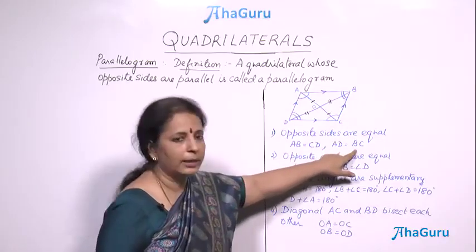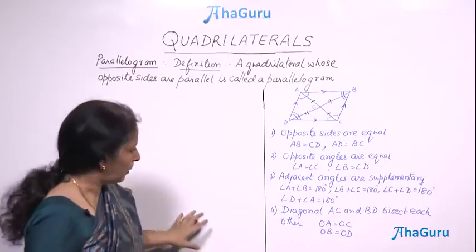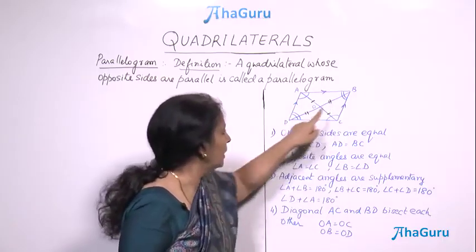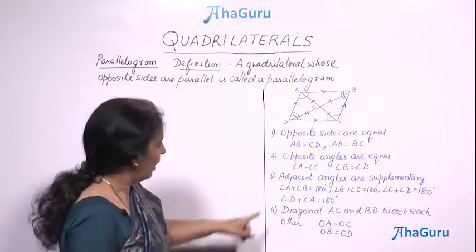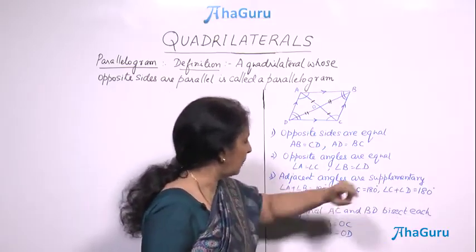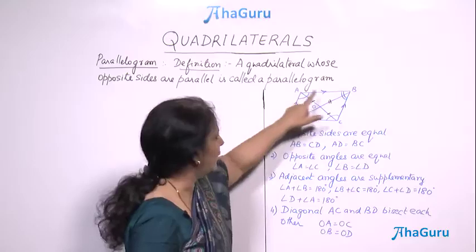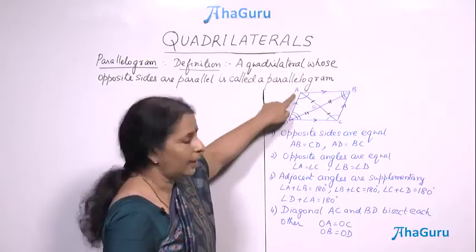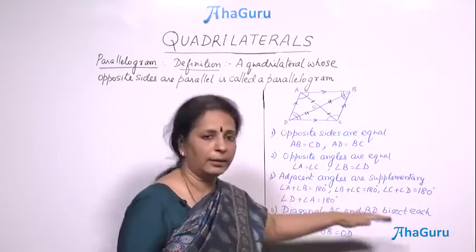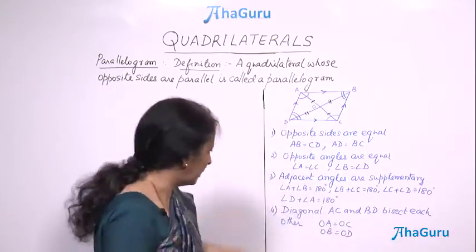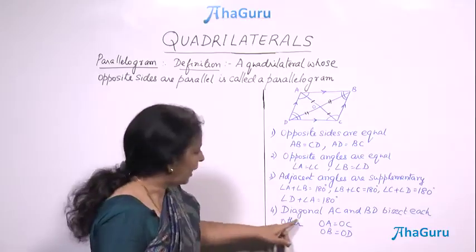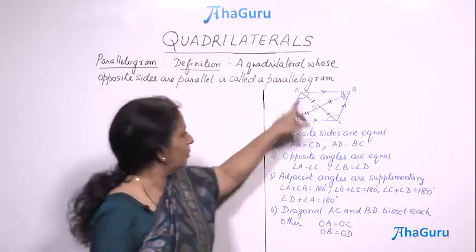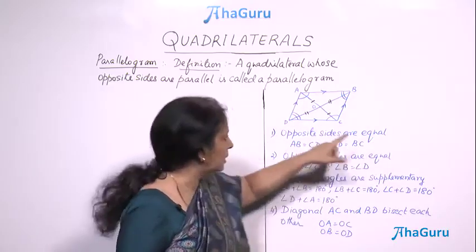This means AB is equal to CD and AD is equal to BC — opposite sides are also equal. Opposite angles are equal: angle A is equal to angle C, angle B is equal to angle D. Adjacent angles are supplementary — A and B are adjacent, B and C are adjacent, C and D adjacent, and D and A adjacent. They are supplementary, meaning their total is 180 degrees.